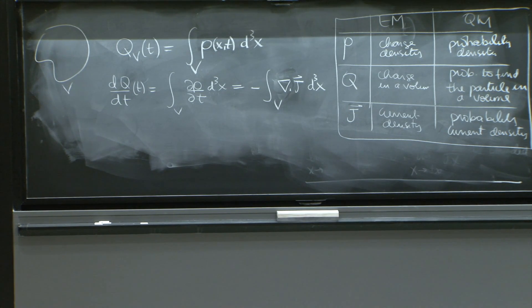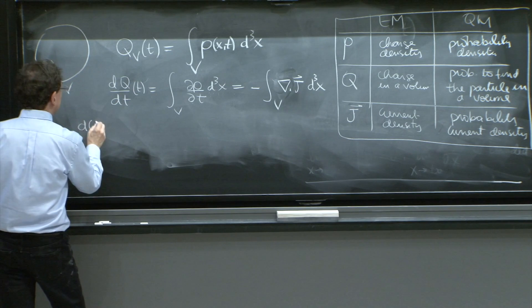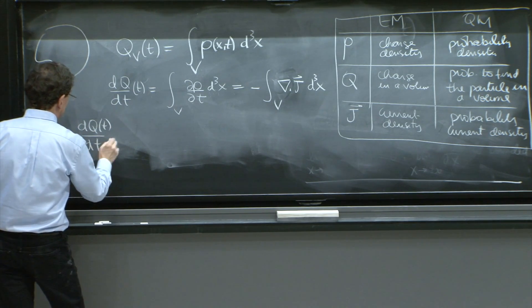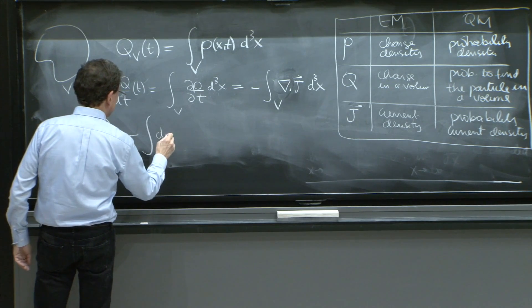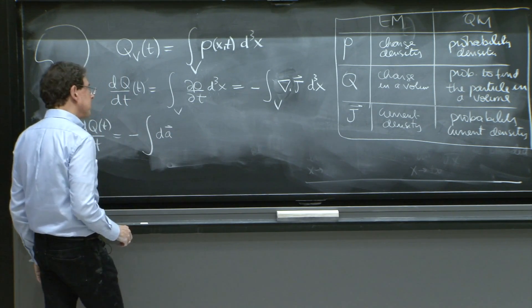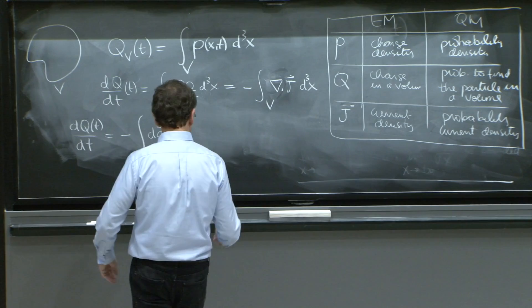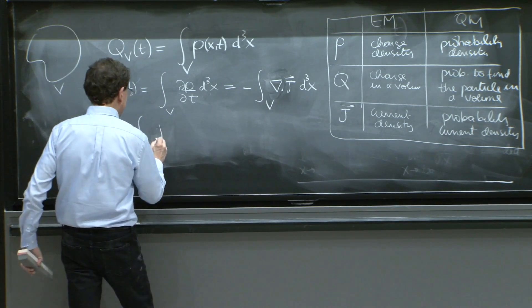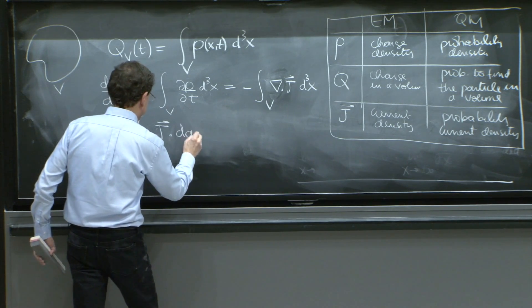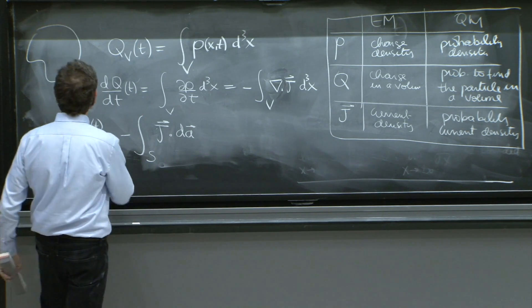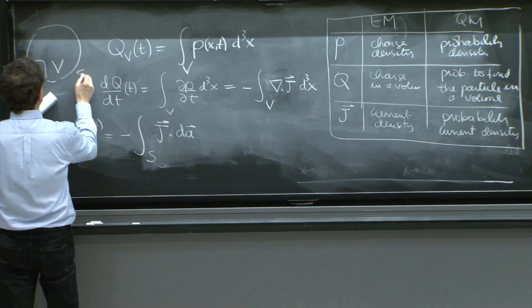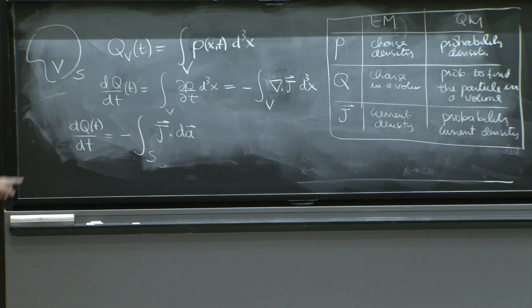dq dt is therefore minus the surface integral, the area of the current times that, so I'll write it as minus j dot da, the flux of the current, over the surface that bounds. This is the volume, and there's a surface bounding it. So by the divergence theorem, it becomes this. And this is how you understand current conservation.